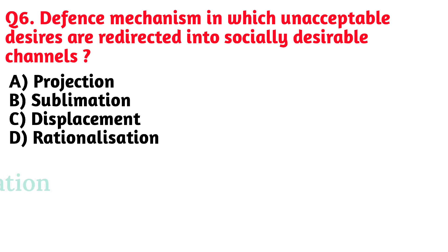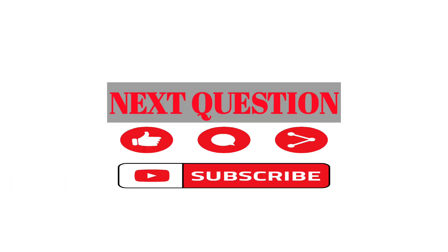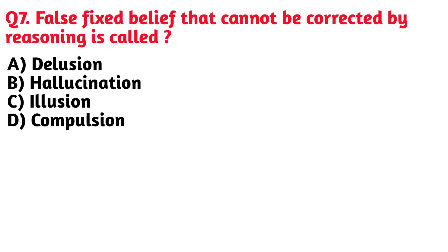Next question: Defense mechanism in which unacceptable desires are redirected into socially desirable channels. Option B. Sublimation is the correct answer.